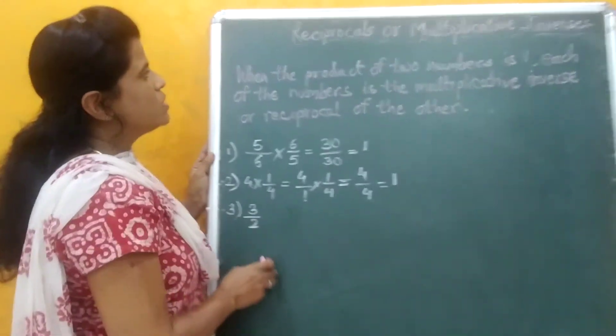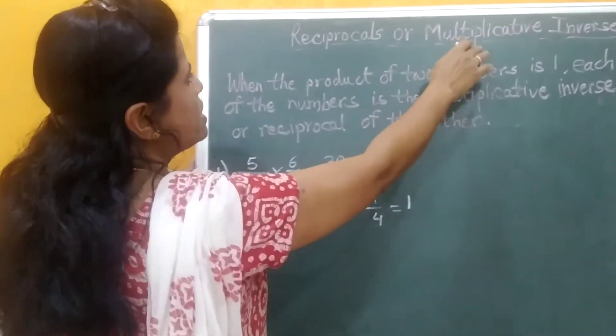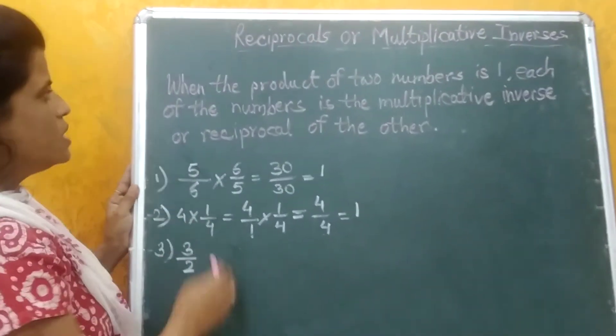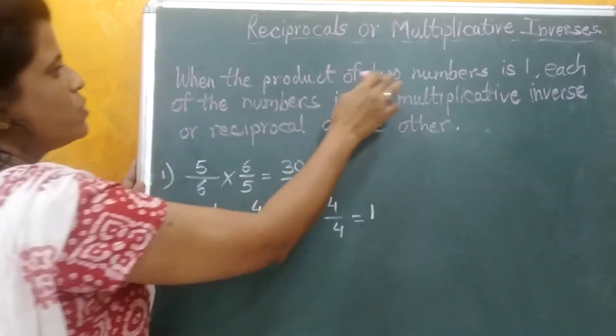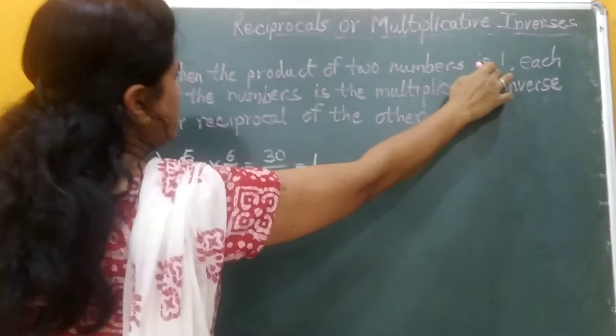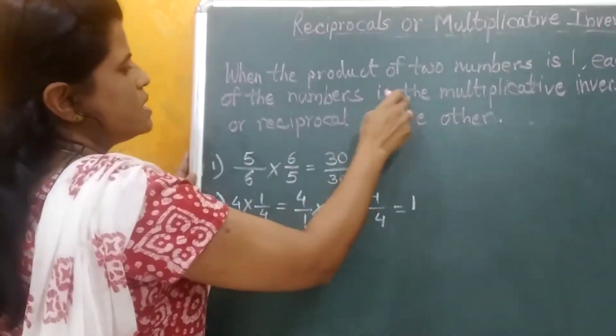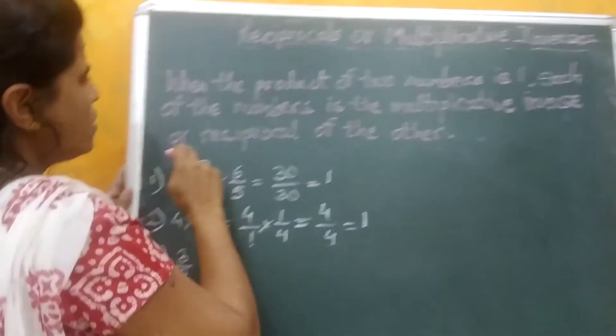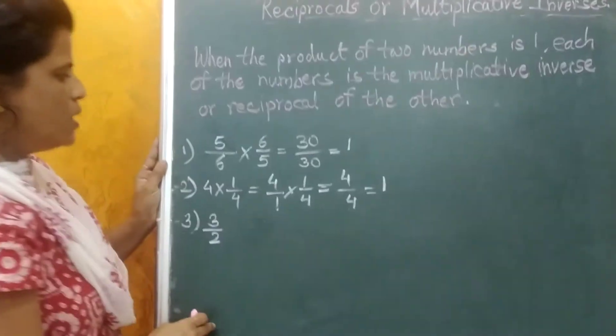Hi friends, today we are going to see the reciprocals or multiplicative inverse. When the product of two numbers is one, each of the numbers is the multiplicative inverse or reciprocal of the other. See how?